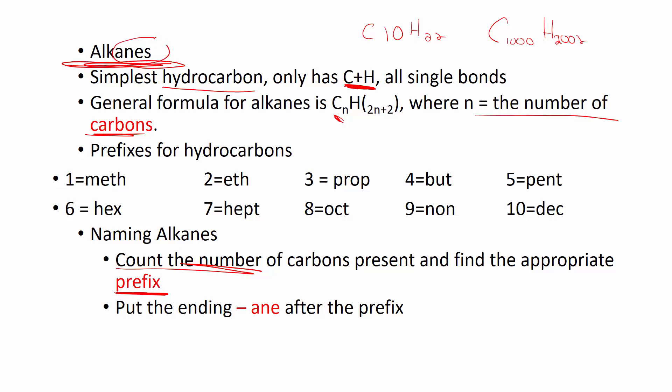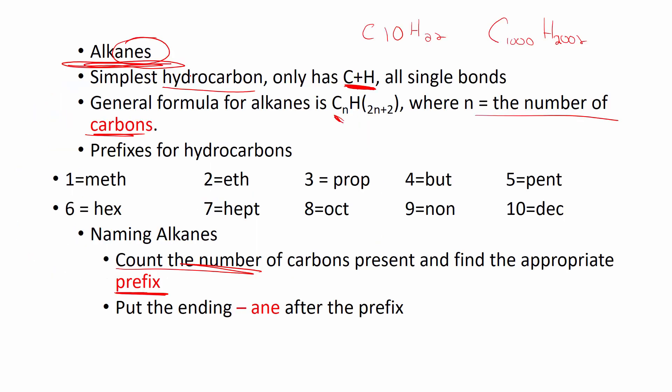The number of carbons is going to tell us what prefix we should use. And notice this prefix system is different. It's not mono, di, tri. It's meth, eth, prop, but, pent. And you've heard these before because alkanes end in -ane. So methane, ethane, propane, butane, pentane, hexane—those are words that you probably have heard before. So all you have to do to name an alkane is figure out how many carbons there are. So this has two carbons, so the prefix for two is eth, and it's an alkane, so we put -ane on the end: ethane. This one has nine, the prefix for nine is non, and then we put -ane on the end: nonane. It's very simple.